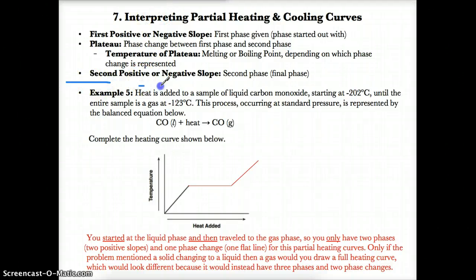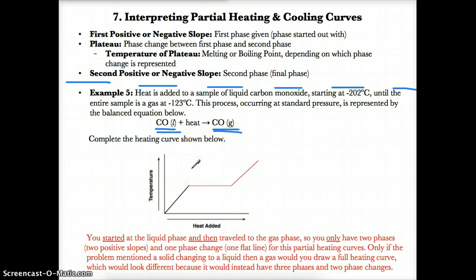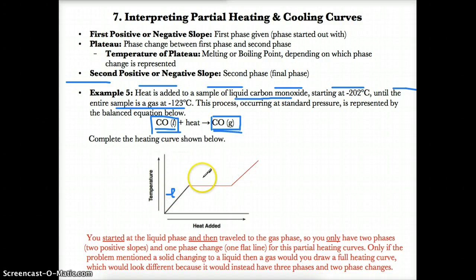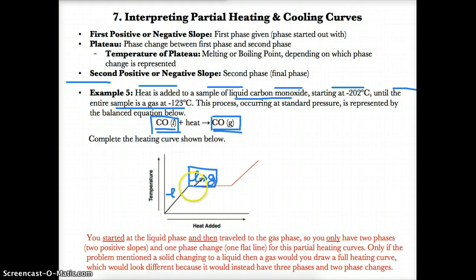Example five says: heat is added to a sample of liquid carbon monoxide — represented as CO(l) + heat → CO(g). Complete the heating curve below. Since we start as liquid CO and end as CO gas, we start at the liquid phase and travel all the way up to gas. After a liquid, a phase change must always follow, so the next step goes to a flat line representing liquid-to-gas evaporation.